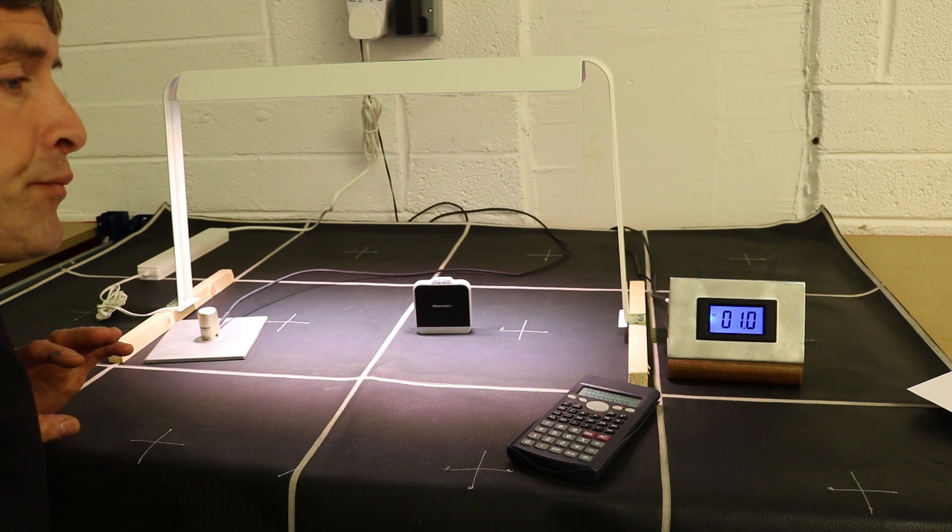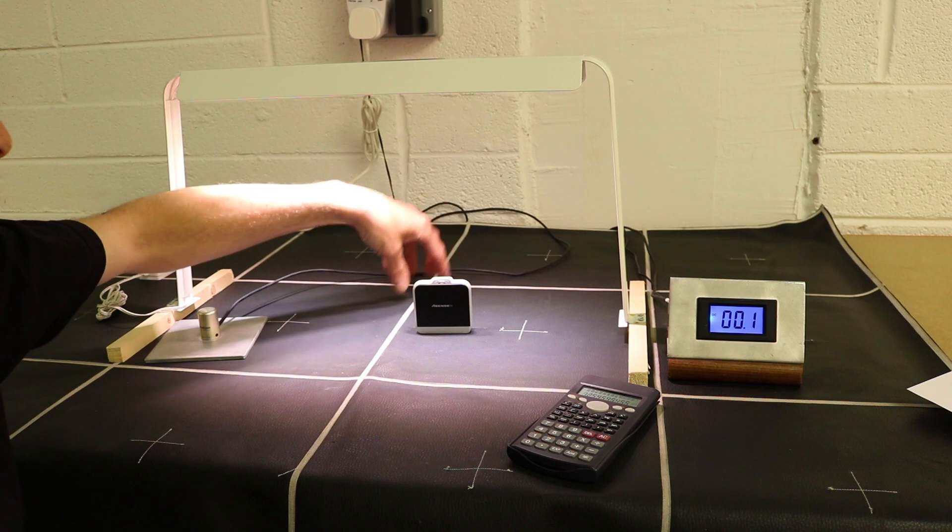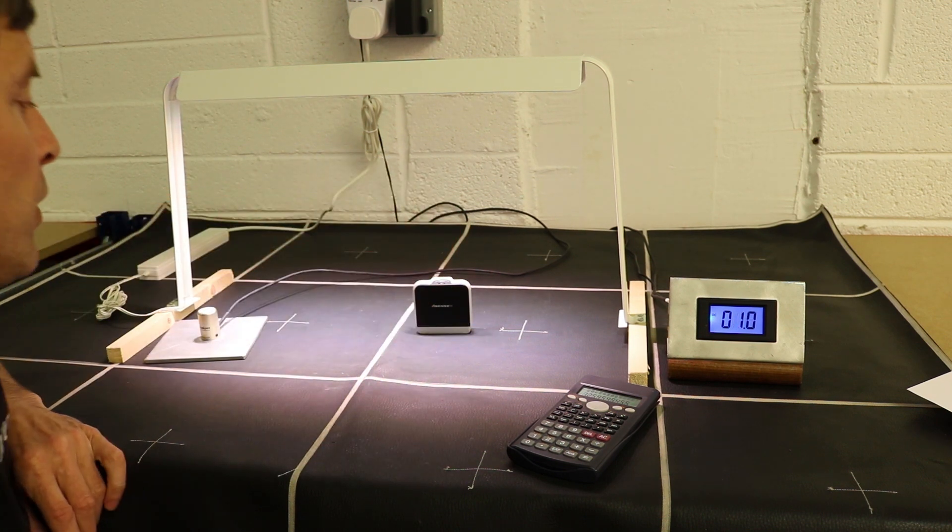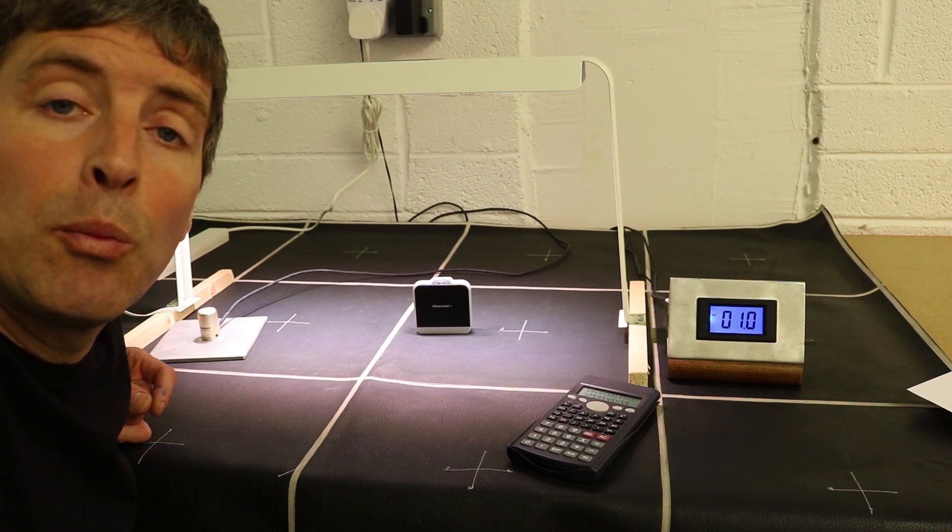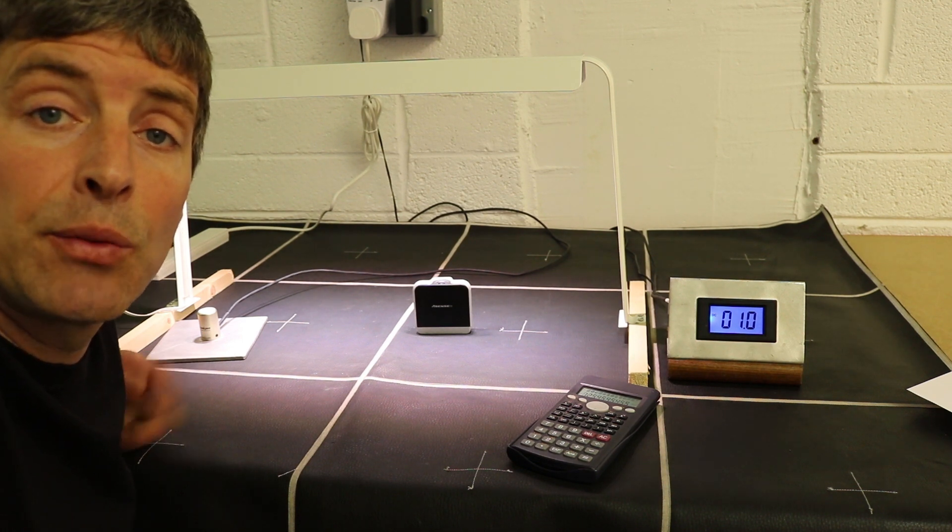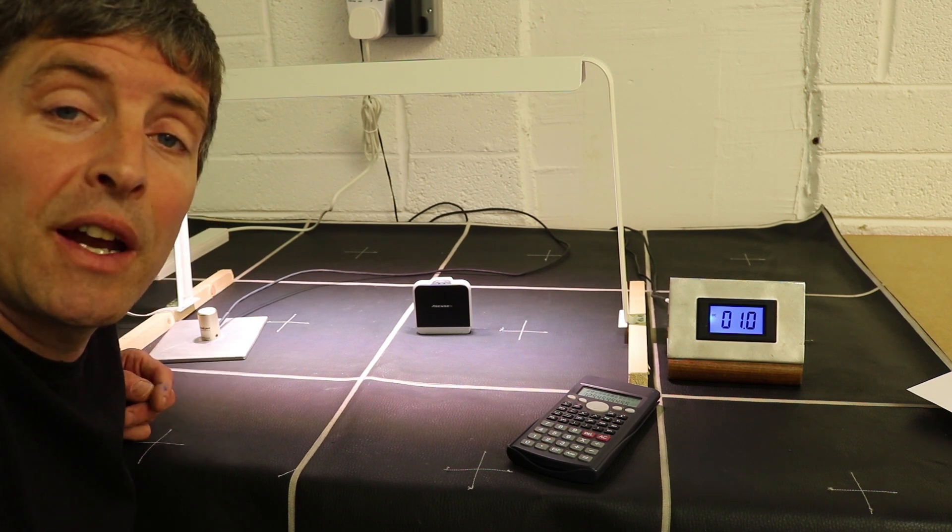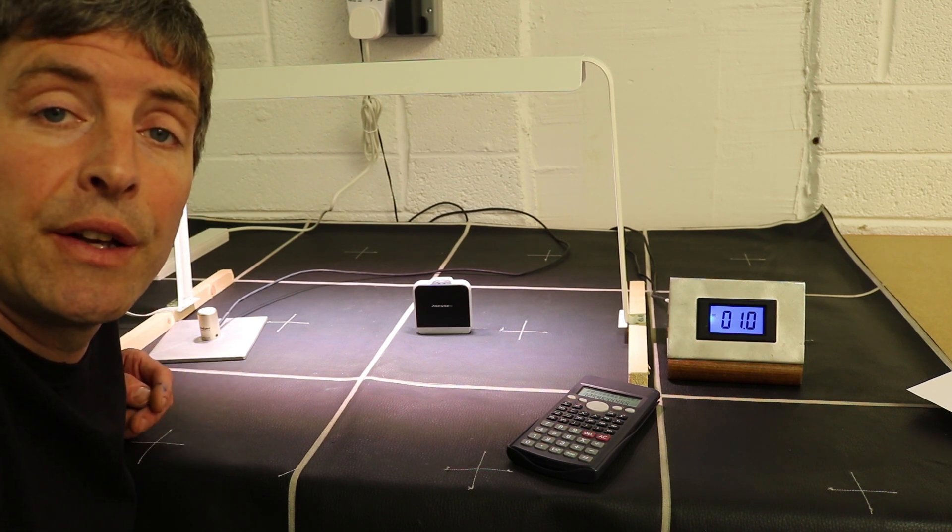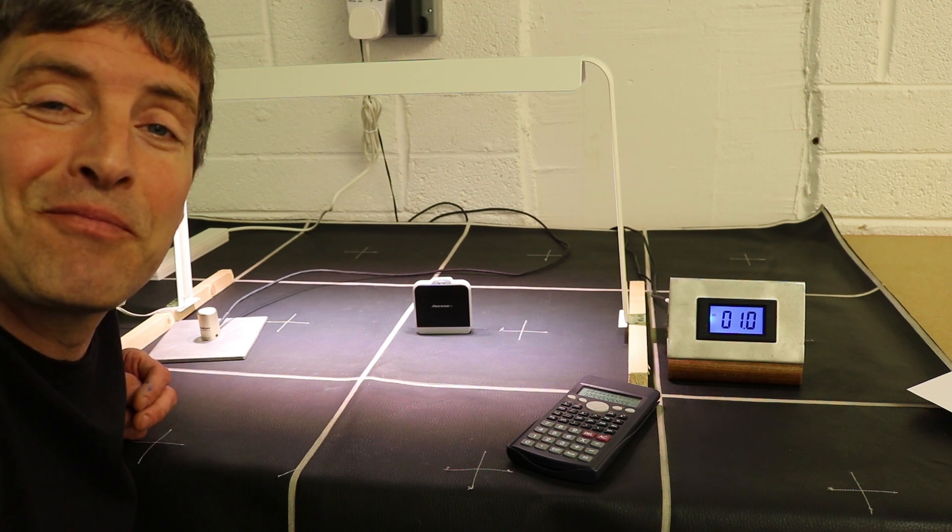So not a bad light at all. You get an average of 115 over a two foot by one foot area and an efficiency of 1.26 micromoles per watt, which is actually pretty good. I'm going to set it up and use it and I'll let you know how I get on. Cheers, bye.